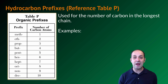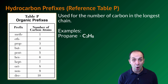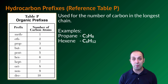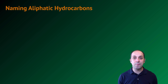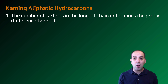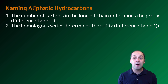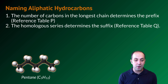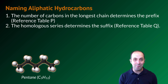Let's look at some naming examples. Propane has three carbons in its longest chain, which is why it has C3 in its formula. Something like hexyne has six carbons because 'hex' is the prefix for six. You need to be able to name aliphatic straight-chain hydrocarbons. The first rule is that the number of carbons in the longest chain determines the prefix, using Reference Table P. The second rule is that the homologous series — alkane, alkene, or alkyne — determines the suffix, using Reference Table Q. So this molecule here is pentane: five carbons in its longest chain, ending in -ane because it's an alkane with no double or triple bonds.